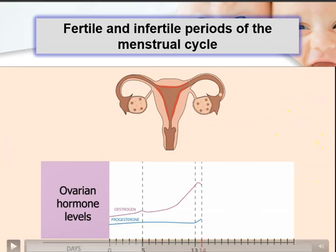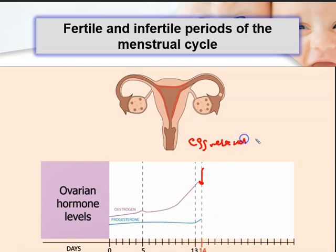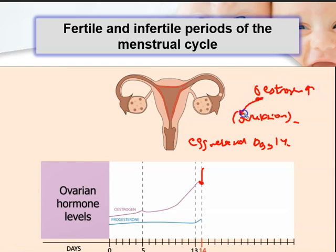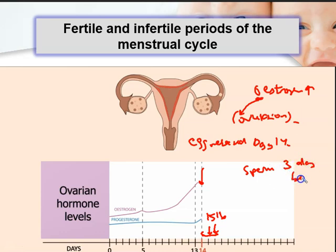The egg is actually released on day 14, which is known as ovulation. This is when your estrogen level is the highest, because estrogen actually stimulates ovulation. The egg can actually survive up to 24 to 48 hours after being released in the woman's body, so it can survive on day 15 and day 16. A sperm can survive up to 3 days before the egg is released, so if the egg is released on day 14, the sperm can survive from day 13, day 12, and day 11.